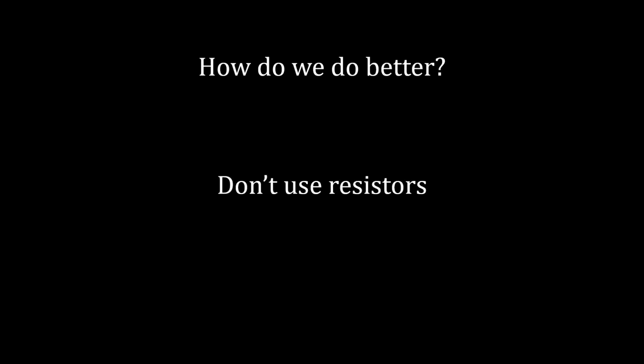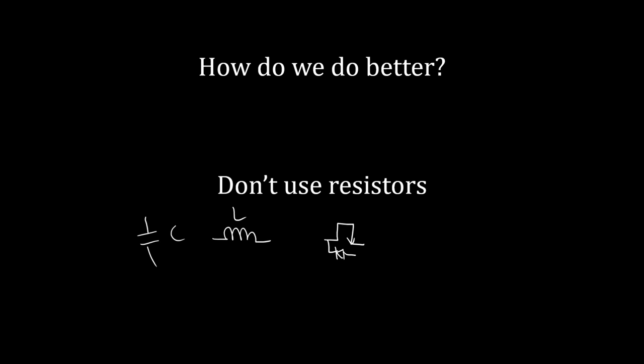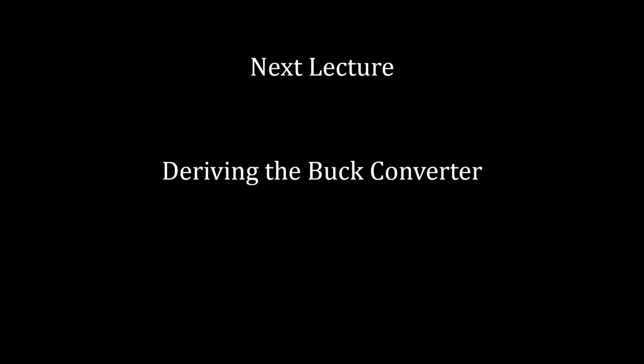So how do we do better than 40%? The answer is: don't use resistors. We have other things — capacitors, inductors, transistors, diodes — and these are the main building blocks of power converters that allow us to create a more efficient converter. Next lecture, we're going to derive the buck converter, which is kind of the first, primordial converter of power electronics — the simplest and in some cases most elegant kind of converter. That's it for now; I hope you enjoyed it. See you next time.